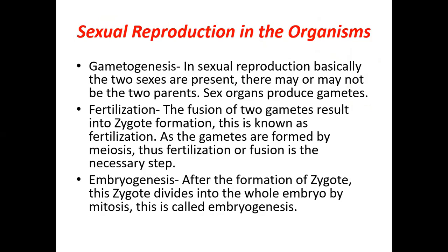Sexual reproduction always involves two parents — the male and the female. Male parents produce sperm and female parents produce eggs. The process of gamete formation is called gametogenesis. The fusion of two gametes — one male and one female — results in zygote formation, which is known as fertilization.